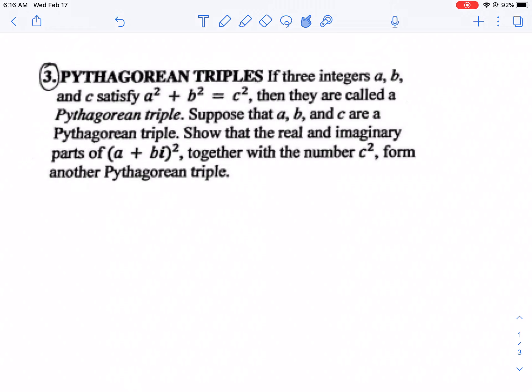Let's take a look at MT3LT3 assignment problem number 3. We know three integers satisfy Pythagorean triple if A squared plus B squared equals C squared.